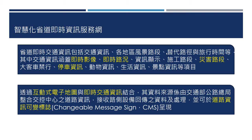智慧化省道系统也可以透过互动式电子地图与即时交通资讯做结合。资料来源是由公路总局整合，包含交通控制中心的道路资讯，以及接受路侧车辆设备回传的资料，进行处理之后，可以在道路资讯可变情报标志，也就是CMS，来做呈现。这个标志系统比传统标志更能贴心地提供服务。